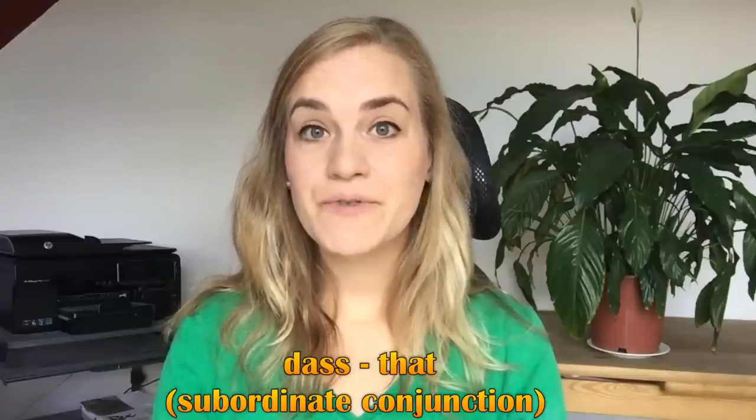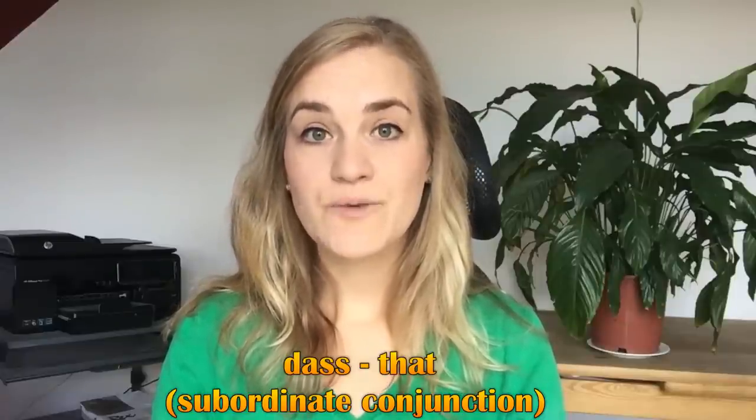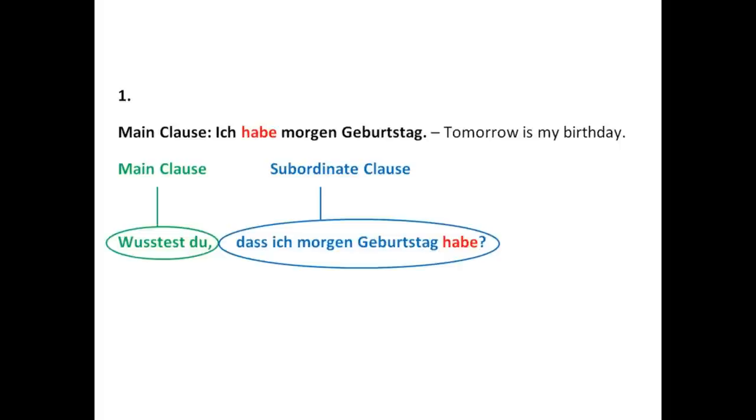Now you have to remember that if you use 'dass' in a sentence, the structure of the sentence will change. I want to teach you this subordinate conjunction by introducing you to the phrase 'did you know that' — for example, 'did you know that he got promoted?' or 'did you know that they are moving to Berlin?' In subordinate clauses, the structure of the sentence changes. Let's take a look at the first example.